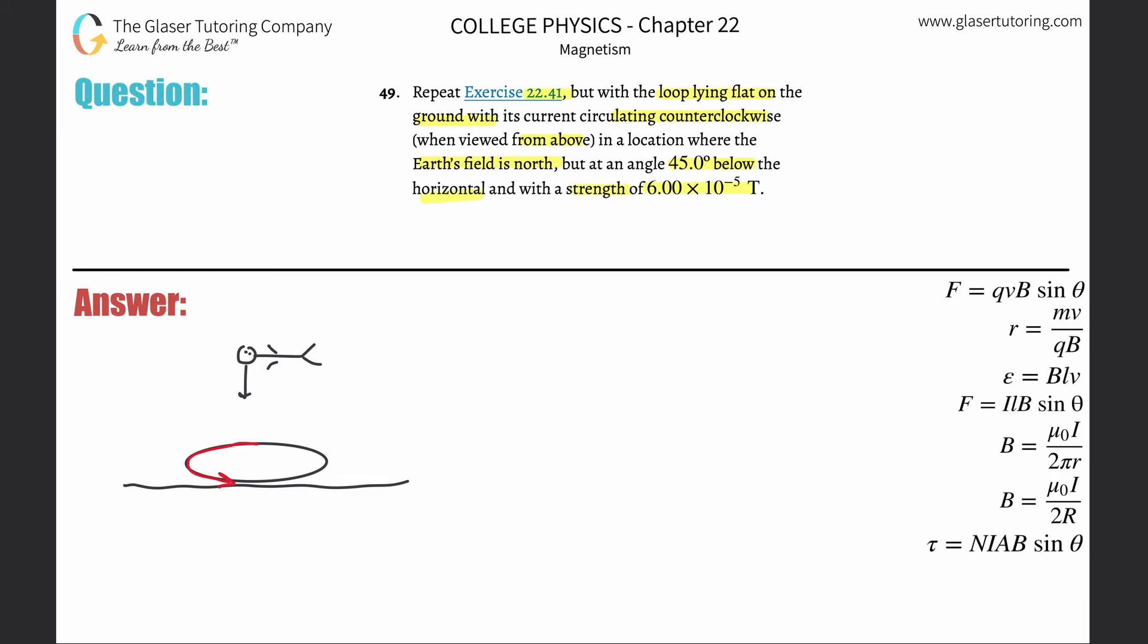In a location where Earth's field is north but at an angle 45 degrees below the horizontal. So now it's no longer pointing directly north, because this would be horizontal and it's pointing directly into the page. Instead, if you had to imagine this vector pointing away and into the page, it is now going to be pointing at an angle below the horizontal.